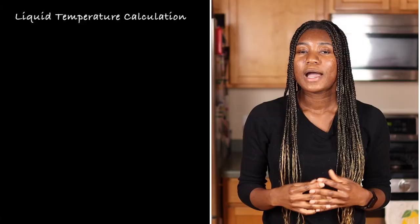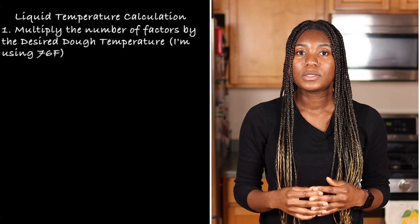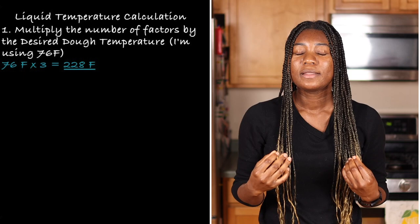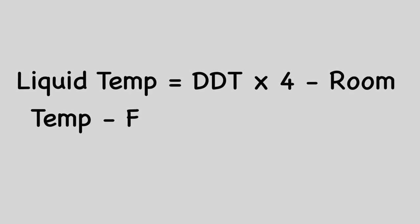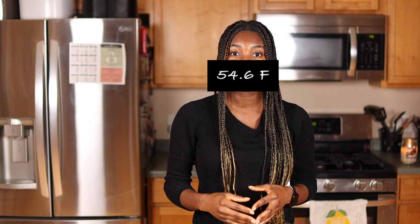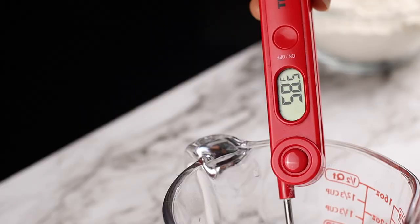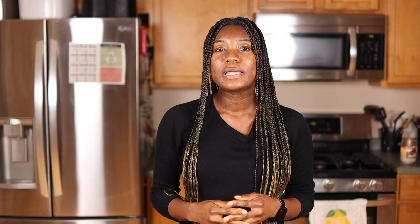I'm making a basic sandwich bread. My number of factors is 3, so I'm going to multiply 76 by 3, which gives me 228 degrees. Next, subtract the temperature of the room and the temperature of the flour. I'm using my stand mixer for kneading so I'll subtract 22. Now we just need our liquid to be around 56.4 degrees. I recommend starting with liquid that is very cool and you can warm it up if needed. The temperature of my liquid was actually higher than I needed, so I put it in the freezer for a few minutes to cool it down.